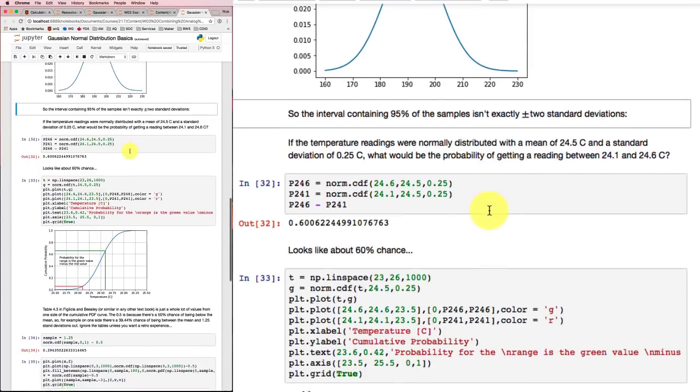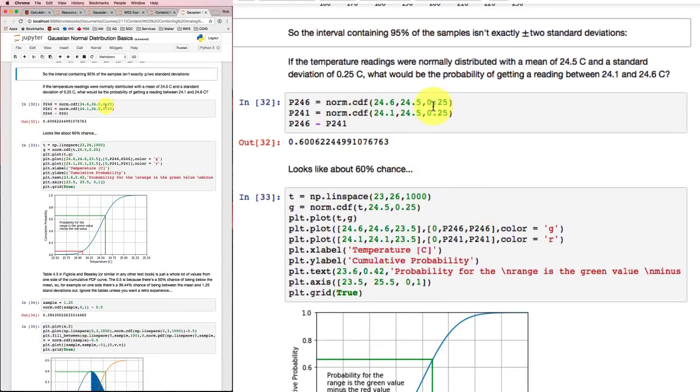If we wanted to find out something a little more involved, say we weren't interested in something symmetric about the mean, we might ask a question like, if temperature readings were normally distributed with a mean of 24.5 degrees Celsius and a standard deviation of 0.25 degrees Celsius, so that's pretty tightly clustered around 24.5 degrees, what would be the probability of getting a reading between 24.1 and 24.6? So quite a bit less than the mean and just a little bit over the mean.